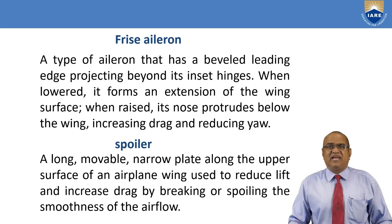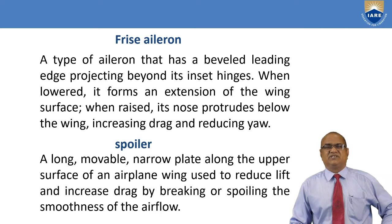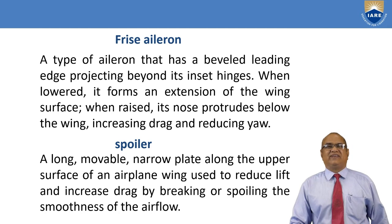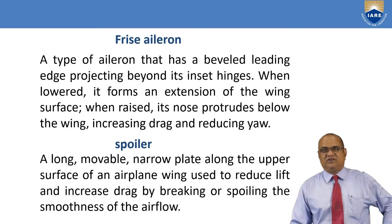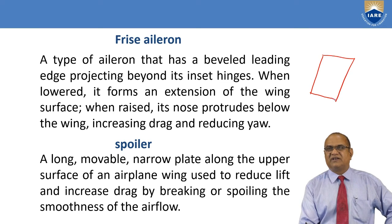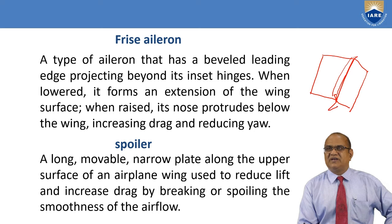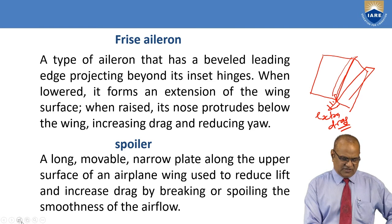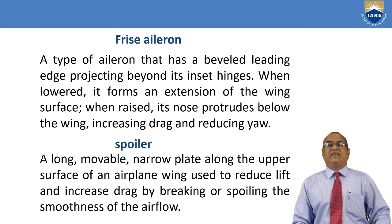Frise ailerons are used in aircraft — a type of aileron that has a beveled leading edge projected beyond its inset hinges. When lowered, it forms an extension of the wing surface. When raised, its nose protrudes below the wing, increasing drag and reducing yaw moment. This Frise aileron, when put down, causes part of it to come up; when raised, that protruding part generates extra drag. These ailerons are used to increase drag and reduce yaw.